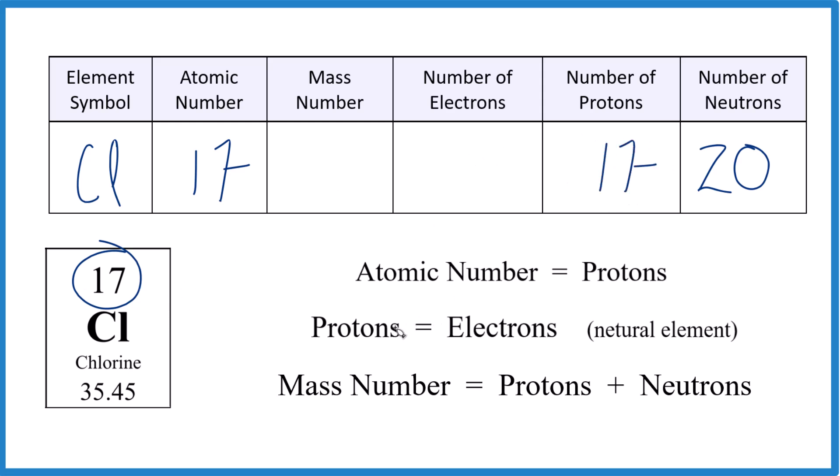This is neutral, so electrons and protons are the same. Mass number, add these up. Protons plus neutrons, 17 here plus 20 is 37. And this is the isotope chlorine-37. Still chlorine, but it's an isotope because of the different number of neutrons. Let's try another one.